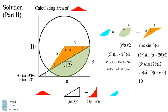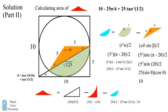Now we have a formula for the region of the circle that we want. It's 25 pi over 2 times the inverse tangent of 1/2 minus 10. So we have all the different areas of the pieces, and we can simplify to get the area of the lower left-hand corner equals 10 minus 25 pi over 4 plus 25 times the inverse tangent of 1/2, which is approximately 1.956.